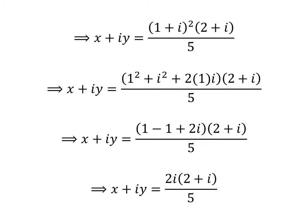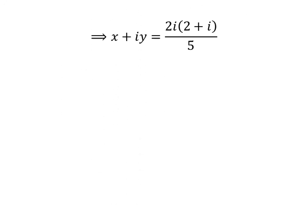Further simplification gives us x plus i times y is equal to 2i times (2 plus i) upon 5. Straight multiplication gives us x plus i times y is equal to 4i plus 2 times the square of i, all upon 5.